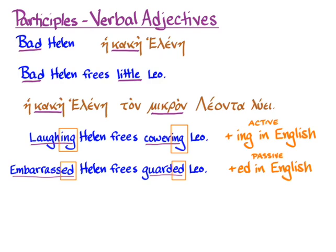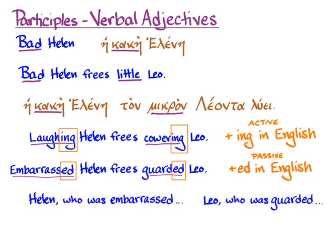When thinking about active and passive, consider the noun that the verbal adjective is describing — that noun is sort of the subject of that participle. In an active participle, 'laughing Helen' — Helen is the one doing the laughing. In a passive participle, 'embarrassed Helen' — Helen is the one who has been embarrassed. 'Helen who was embarrassed frees Leo who was guarded' is another way of thinking about verbal adjectives as relative clauses, and it will be helpful to think about them that way with some participles in Greek.